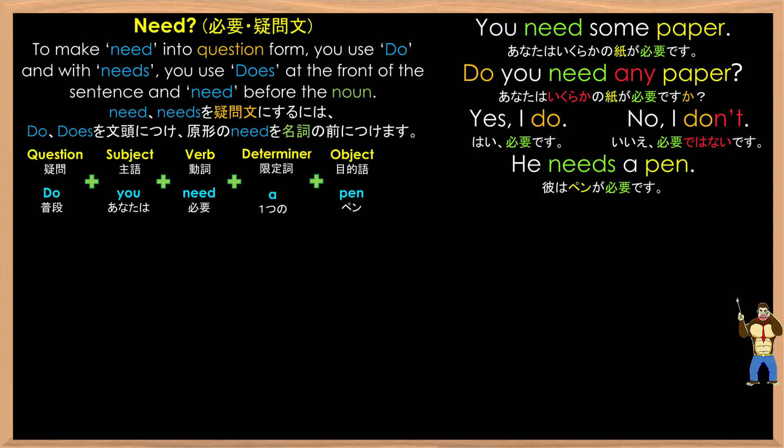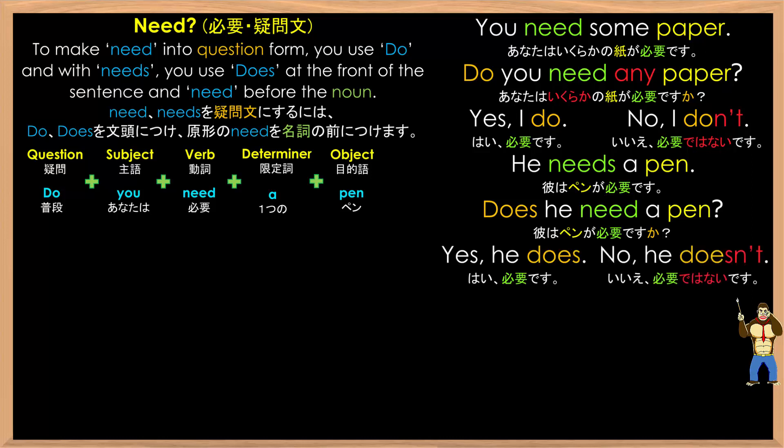'He needs a pen' becomes 'does he need a pen?' And you can answer: yes, he does. No, he doesn't. As you notice here, all you do is add 'does' to the front of the sentence and put 'need' back into its normal form. So you don't need to put the S at the end of 'need'. It's 'does he need a pen?' — not 'does he needs a pen?' So be careful. You just have to do it one time in the sentence where you change the verb to the S form.